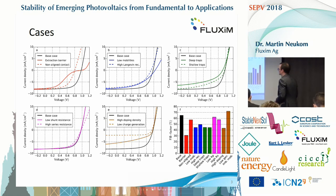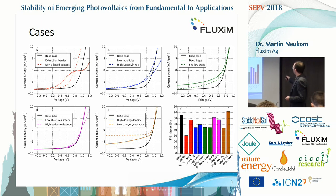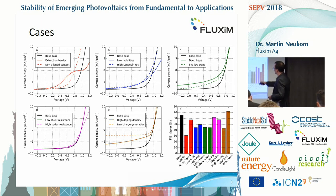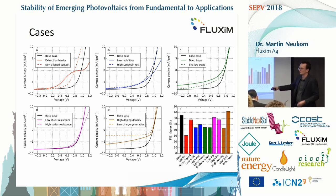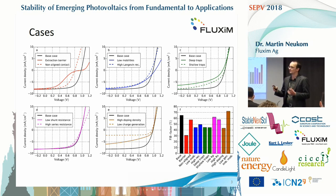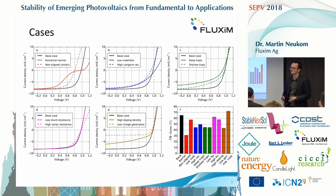We have cases with low mobility, high recombination, and some cases where we have traps. Deep traps lead to Shockley-Reed-Hall recombination, and here just shallow traps — one case with doping. We simulate an IV curve; the extraction barrier case shows an S-shape, as expected. The non-aligned contact case is just shifted to the left. High doping density also reduces the fill factor and the current significantly, because doping screens the electric field and charges cannot be extracted.